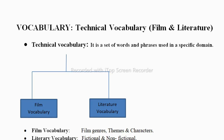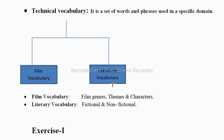In this topic we are learning film technical vocabulary and literature vocabulary. Under film vocabulary you have film genres, themes, and characters. Film genres are the categorized types of films — it could be action, adventure, comedy, thriller, western, horror, or romantic. Themes could be conflict, faith, friendship, justice, love, revenge, romance, sacrifice, or transformation. Characters in a film include antagonist, protagonist, cardboard character (fictional character), foil, narrator, and stereotype.